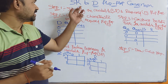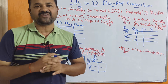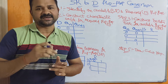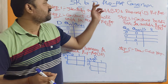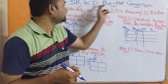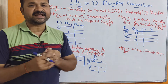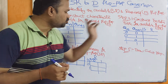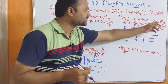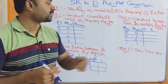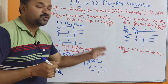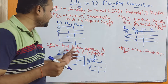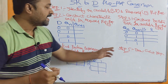Let us discuss SR to D flip-flop conversion. There are five steps. Step one is identify the available and required flip-flops — the available flip-flop is the source, which is SR flip-flop, and the required flip-flop is the destination, which is D flip-flop. Step two is construct the characteristic table for the required flip-flop. Steps three and four are based upon the available flip-flop, and step five is draw the circuit diagram.